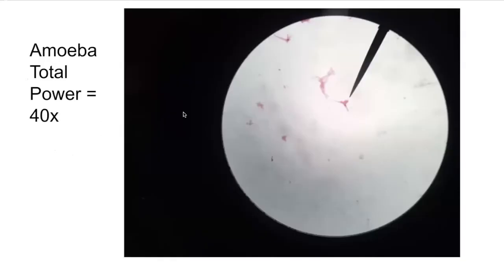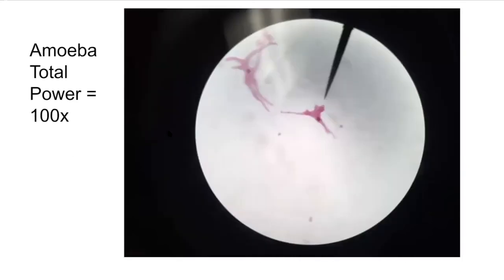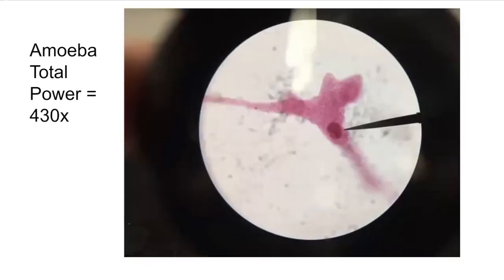Now let's look at the protists we were able to see. We started with our amoeba on low power — they have unique and crazy shapes. As we increase magnification, you can see more detail. At 430 times magnification, you're able to see the nucleus really well and these extensions of the cytoplasm called pseudopods — that's how an amoeba moves. It stretches out a pseudopod and latches onto a surface, then the other side lets go and pushes its cytoplasm toward the pseudopod. Pseudopods are also able to engulf food for the protist.